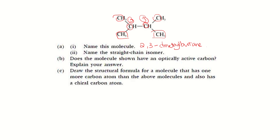Next, part 2: name the straight chain isomer. Isomer means they maintain the same molecular formula but different structural arrangement. So other than the one shown in the diagram, we have to rearrange them in a straight chain. If you count the total number of carbons from the molecule, it's actually 6. The name for this straight chain isomer will be hexane — 6 carbons, no branch, straight chain.